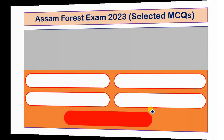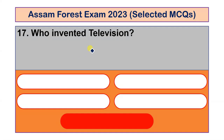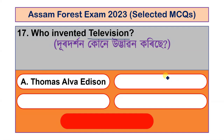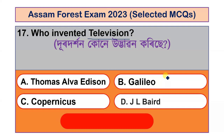Question number 17: Who invented the television? Options include Thomas Alva Edison, Galileo, Copernicus and John Logie Baird. The correct answer is option D, John Logie Baird, also known as J.L. Baird.